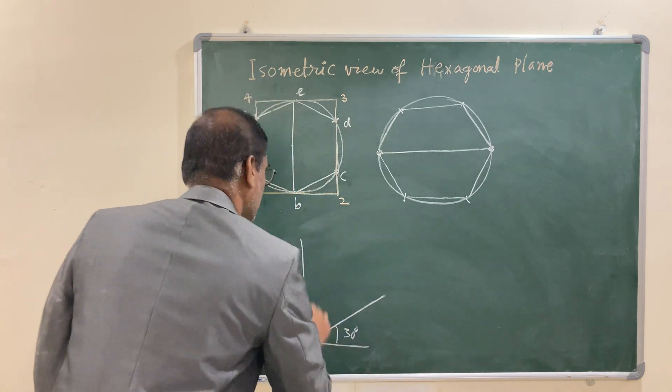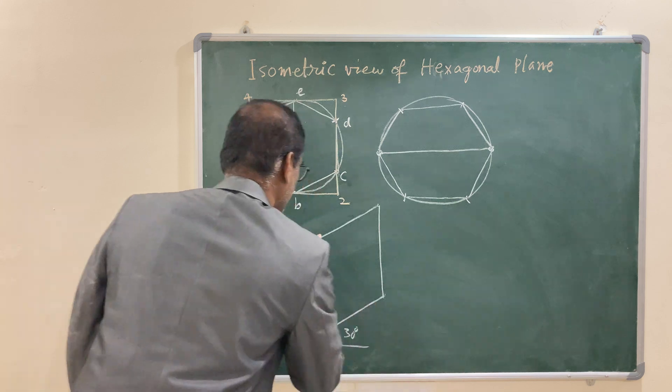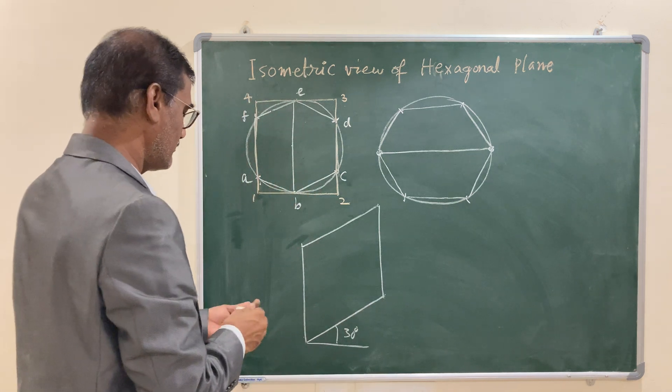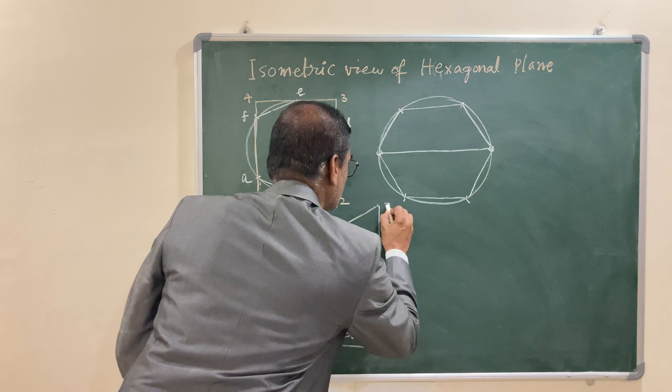So, draw the parallel line and measure this length. Draw the parallel angle and complete the parallelogram in front view. Give the numbers that is 1, 2, 3, 4.